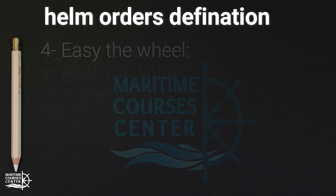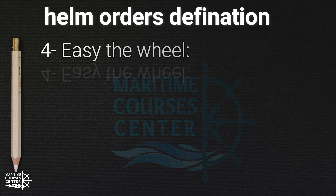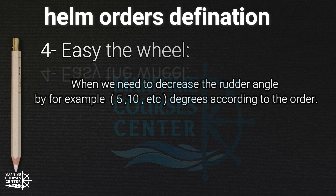Fourth: easy the wheel. This means when we need to decrease the rudder angle, for example 5 or 10 degrees, according to the order.